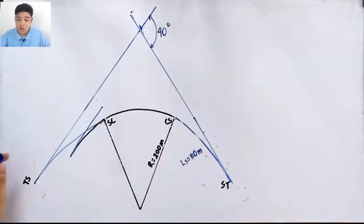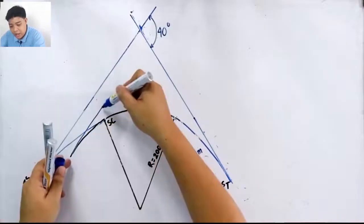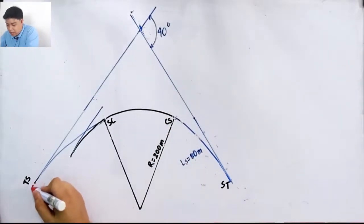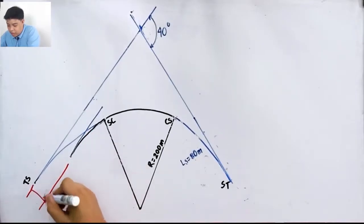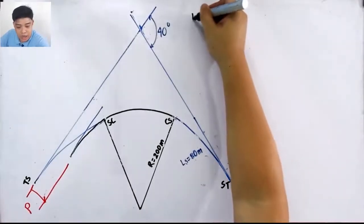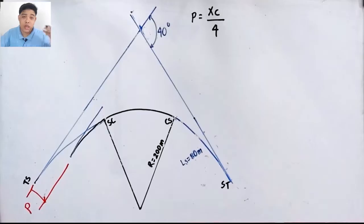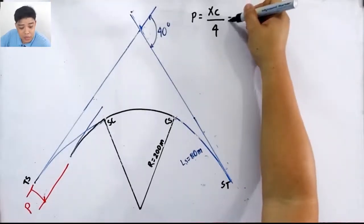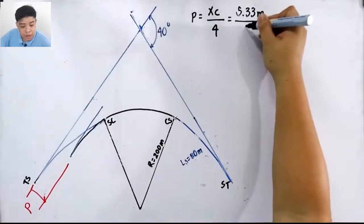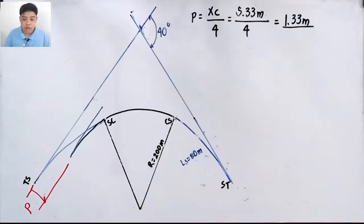The same mechanism applies to the other side. If you extend the circular curve, its tangent drawn at the endpoint will be in the same direction as the tangent at TS. The perpendicular distance from the original layout of the circular curve to the tangent at TS is known as the length of throw, called p. The formula is p = xc / 4, which is 5.33 / 4, giving us p = 1.33 meters.